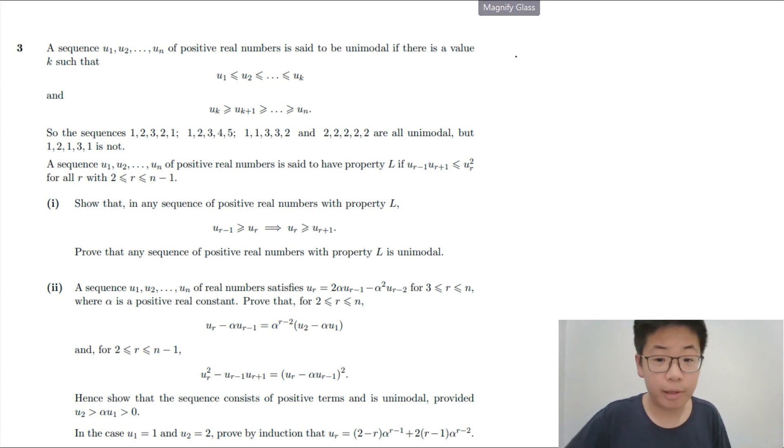This sequence of positive real numbers is said to be unimodal if there is a value. This basically means that the values just go up to the top and then down like a mountain. That's how it works basically.